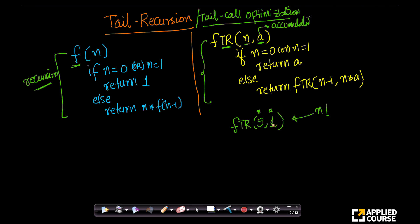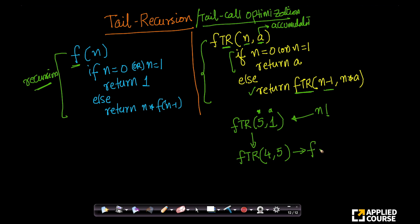Let us look at what happens with ftr(5, 1). If n equals 0 or 1, return a; else return ftr(n minus 1, n times a). So when I call this, it will call ftr(4, n times a). My n is 5 and a is 1, so n times a is 5. This will again call ftr(3, n times a), where n times a is 20, because n minus 1 is 3.